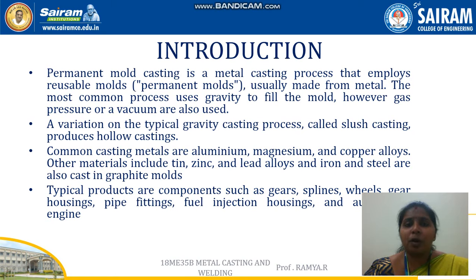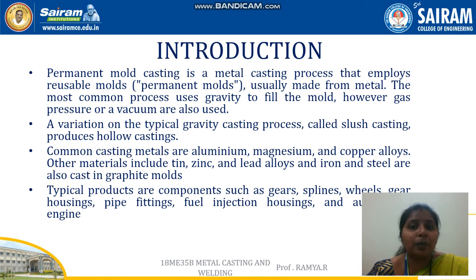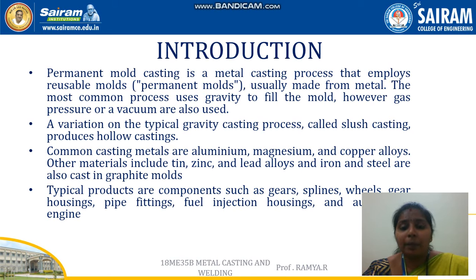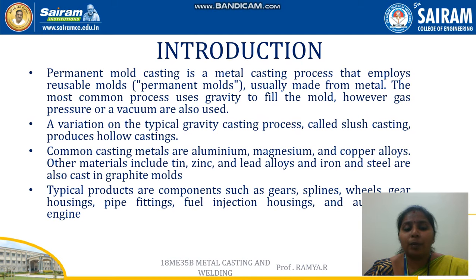A variation of the typical gravity casting process is called slush casting, which produces hollow castings. Usually if we need hollow castings we use a core, but in some metal casting processes there is no need for a core. Without the core itself we can produce hollow castings by various methods. The common casting metals are aluminium, magnesium, and copper alloys. Other metals include tin, zinc, lead alloys, and iron and steel, which are also cast in graphite molds.